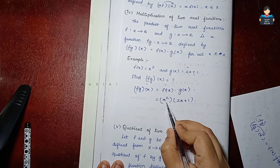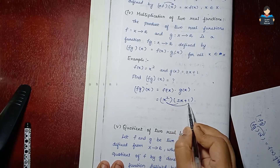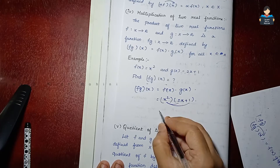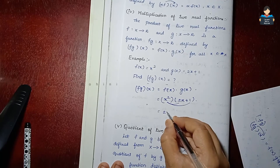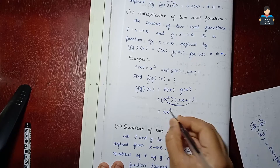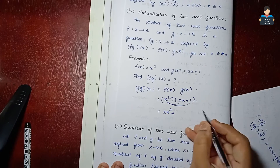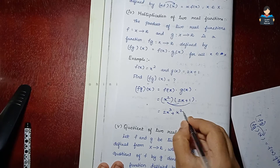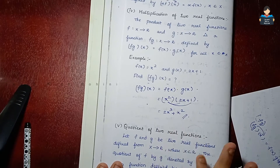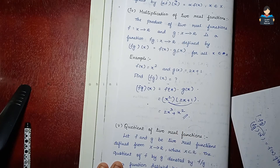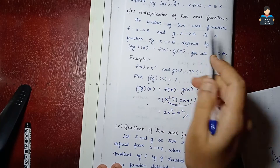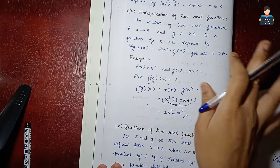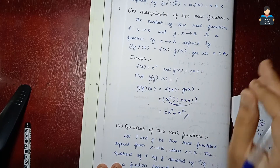So we multiply x squared into 2x plus 1. x squared into 2x gives 2x cubed, and x squared into 1 gives x squared. So the answer is 2x cubed plus x squared. Algebra of real functions is very easy — just find the formula, substitute, and solve.